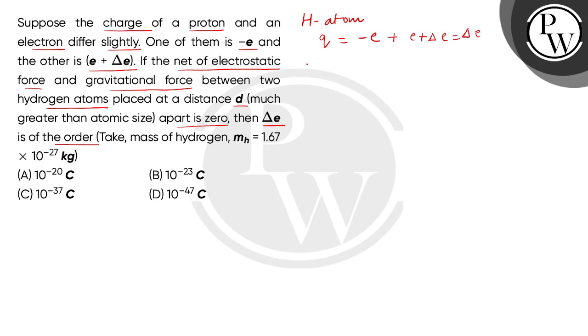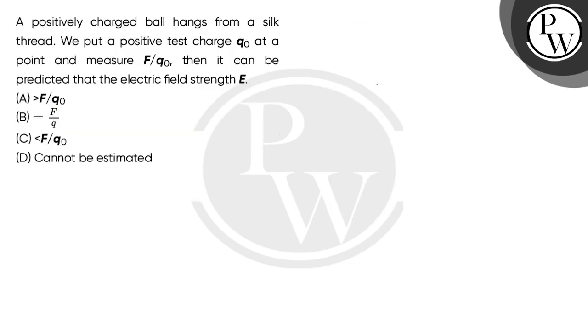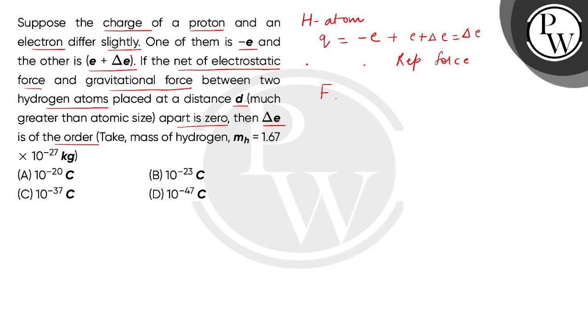Now, if we assume both hydrogen atoms here, if we assume positive here, then the force will be repulsive in nature. So which we can express from Coulomb's law, the repulsive force is equal to K Q squared divided by D squared. The distance between the centers is D according to the question. So here we will have K del E squared divided by D squared.